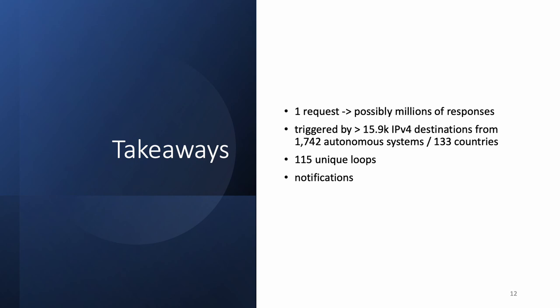Today we've seen that a single DNS request can result in millions of responses. We scanned the whole routable IPv4 space and found amplifiers across thousands of autonomous systems spread over 133 countries. We have also shown that routing loops exist towards the biggest amplifiers and are likely the root cause of this behavior. We shared our findings with operators of 16 amplifier networks, and at the moment none of those trigger repeating responses anymore.